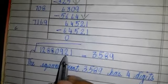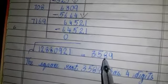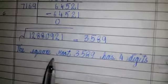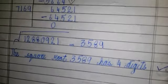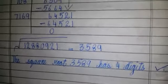The number 12880921's square root is equal to 3589. So the square root 3589 has 4 digits. Thank you for watching. Please share, please subscribe to my channel, and share with your friends.